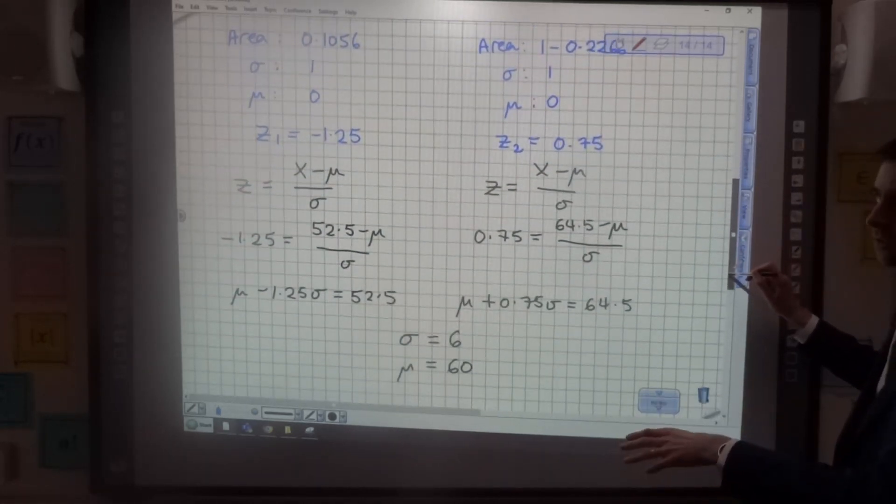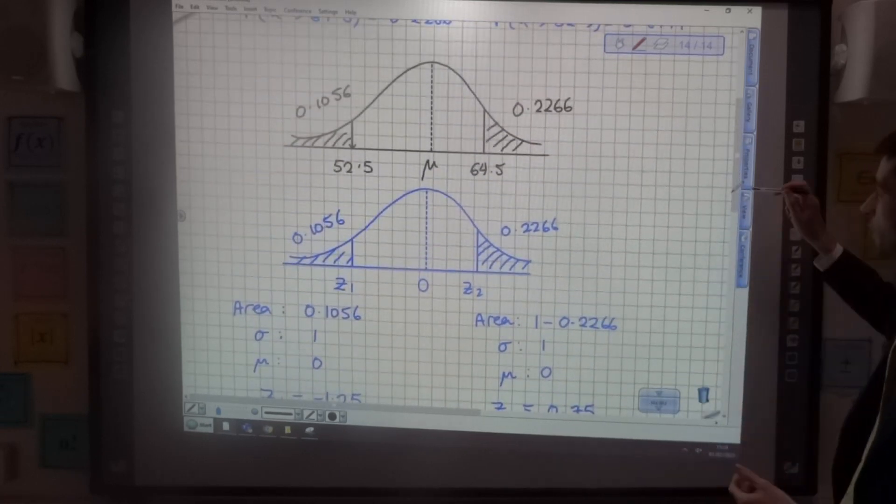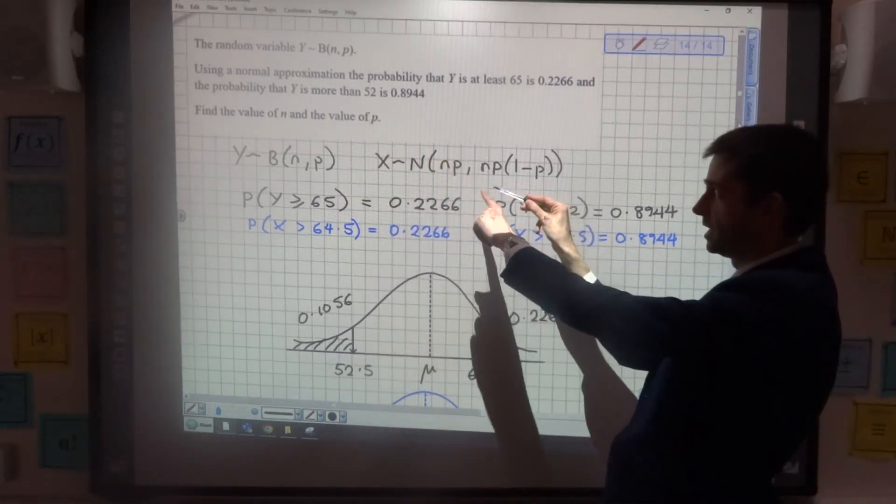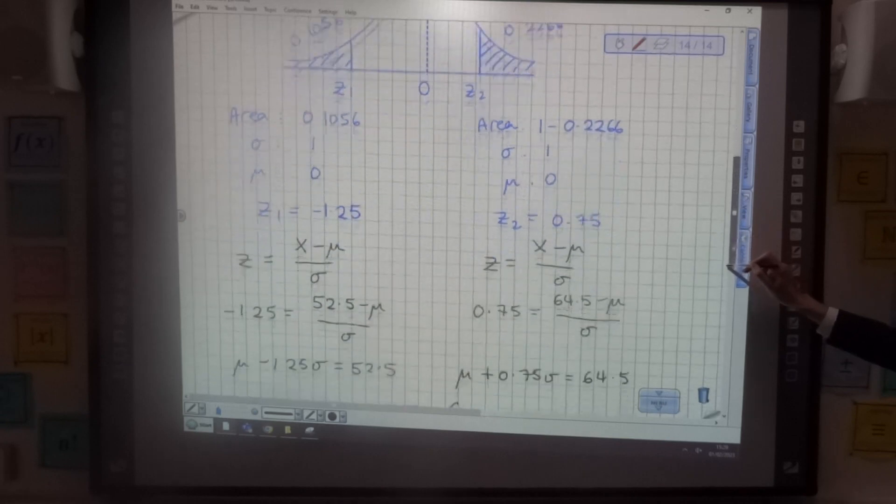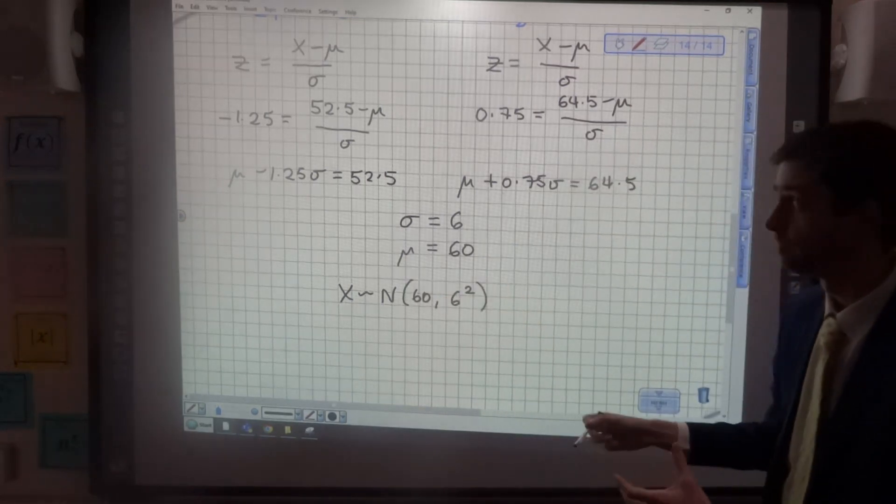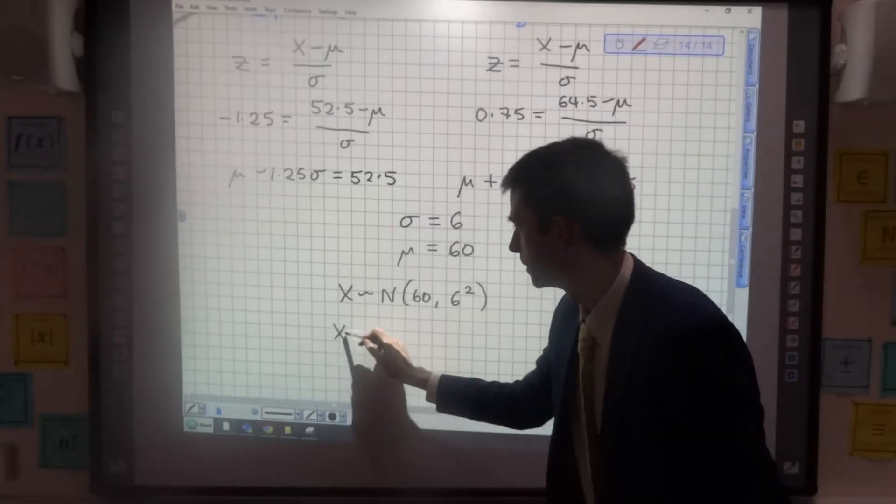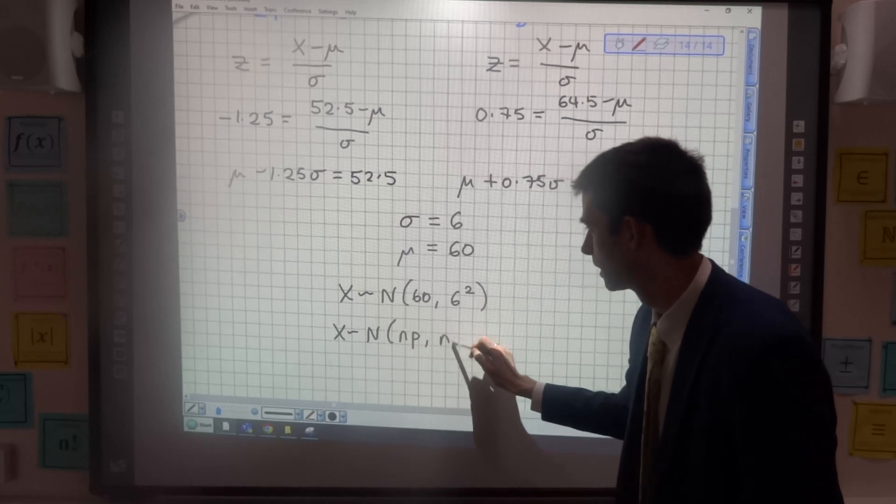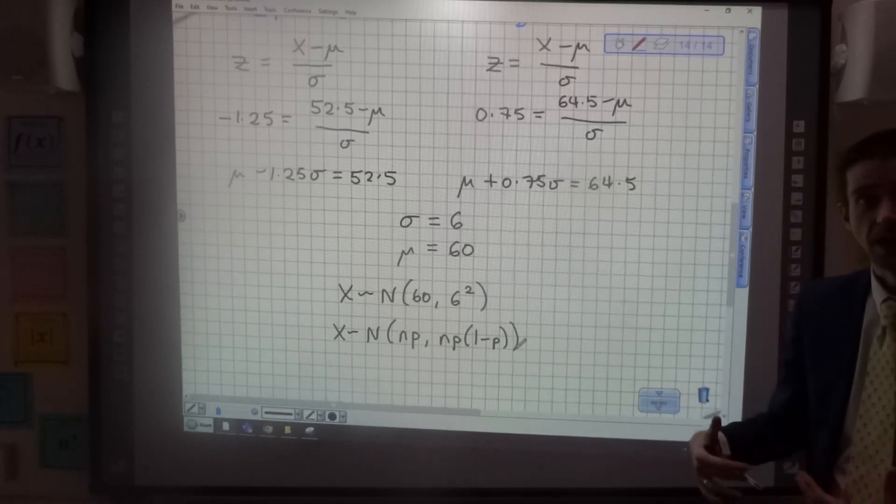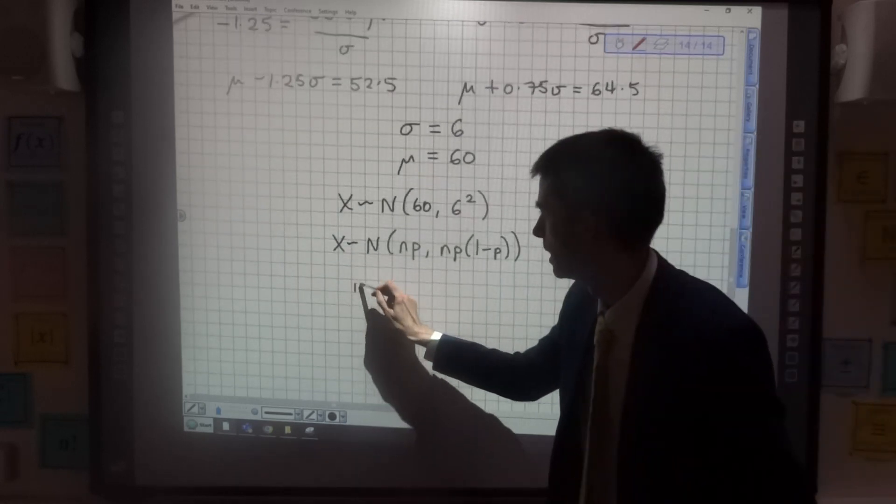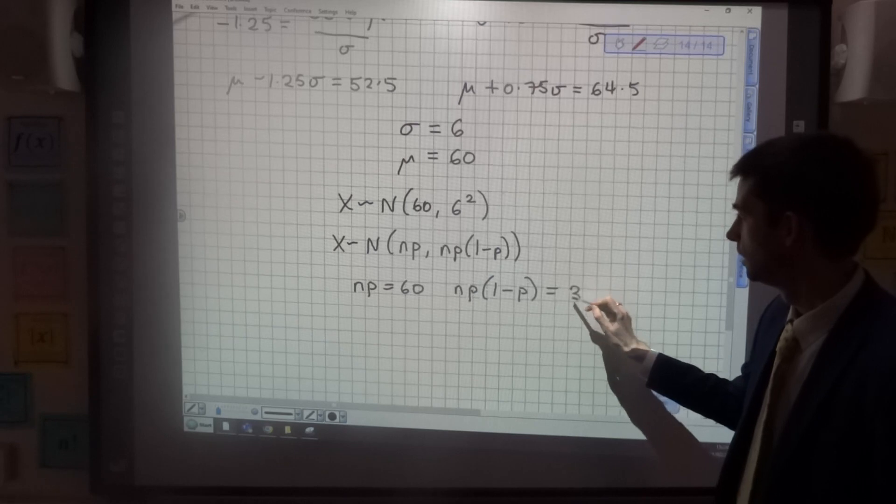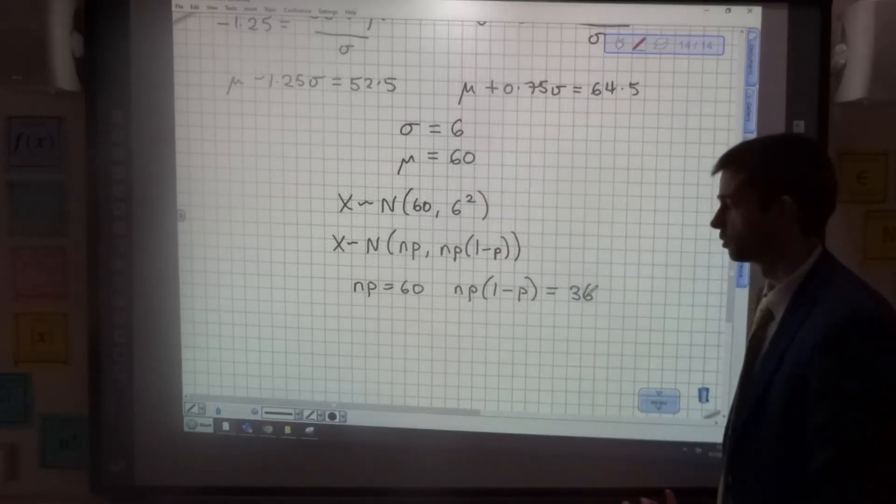So we've got the mean and the standard deviation for this normal approximation to the binomial. But let's just go back to the question. Bear in mind what we've been asked. We've been asked for the value of n and the value of p. So what I've now got to realise is that I've worked out that X follows a normal 60, 6 squared. Remember that that's variance we need at that point now. And at the first stage of the question, I knew that X followed the normal np, np(1 minus p). So I can now use those values to find out n and p. So I know that np equals 60, and I know that np multiplied by (1 minus p) is equal to 36, 6 squared, the variance of that normal approximation.